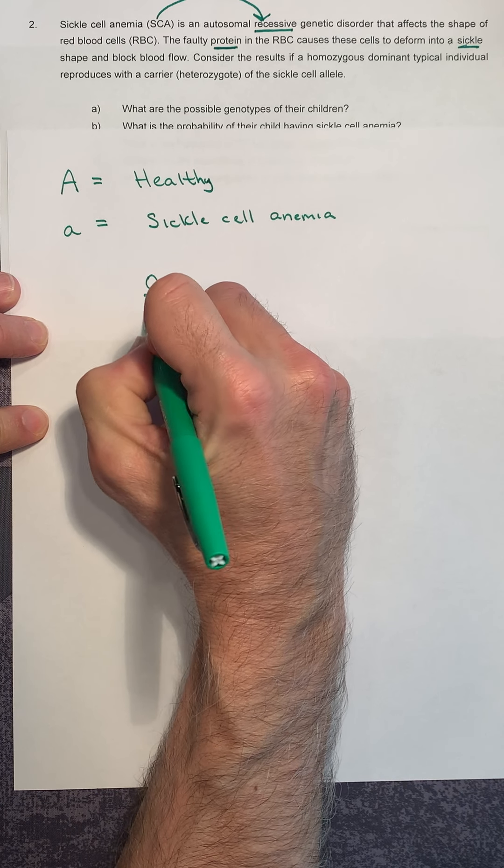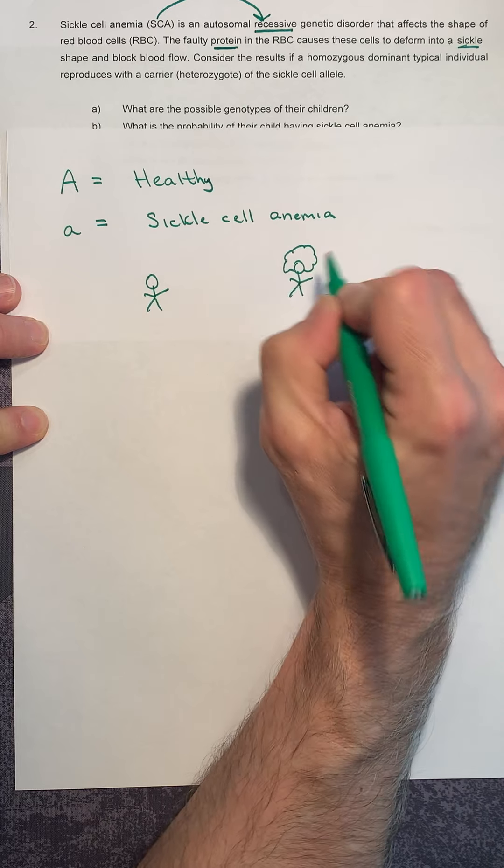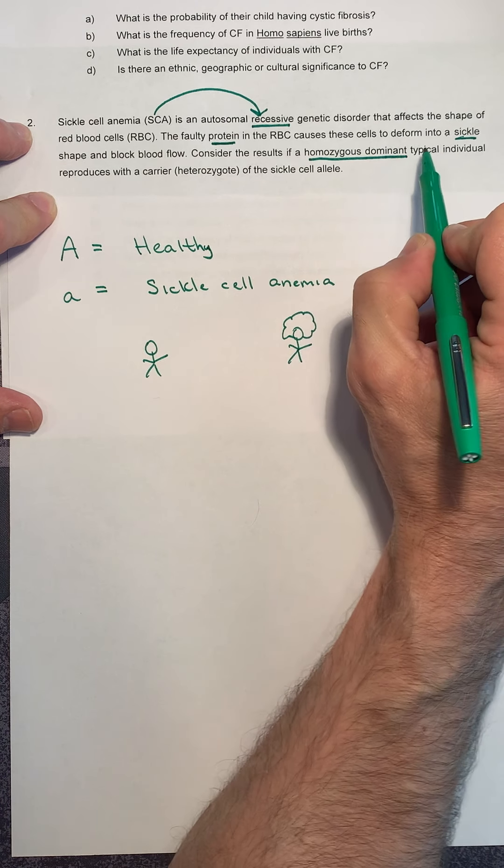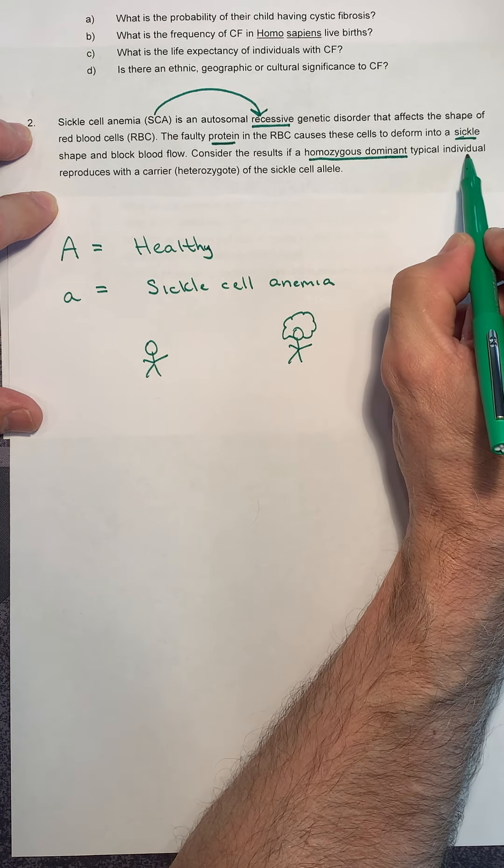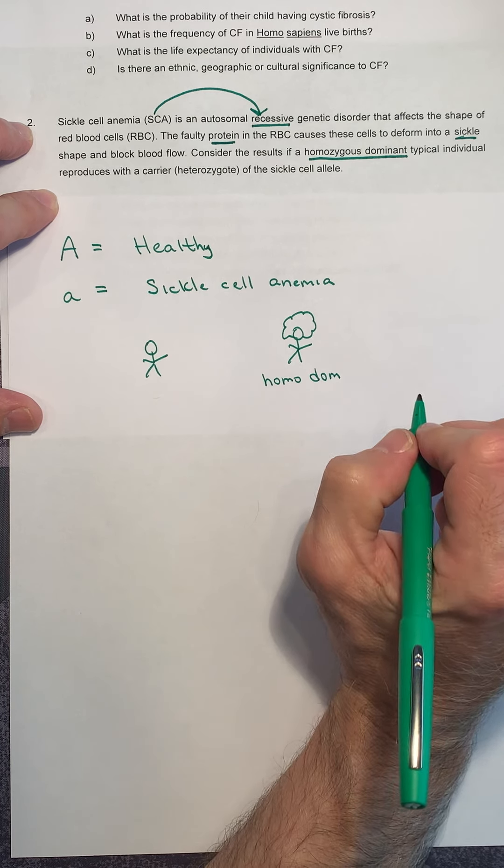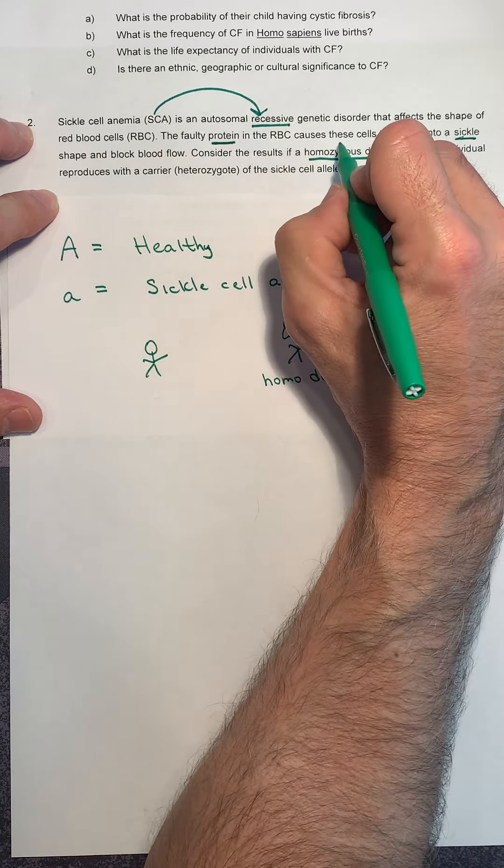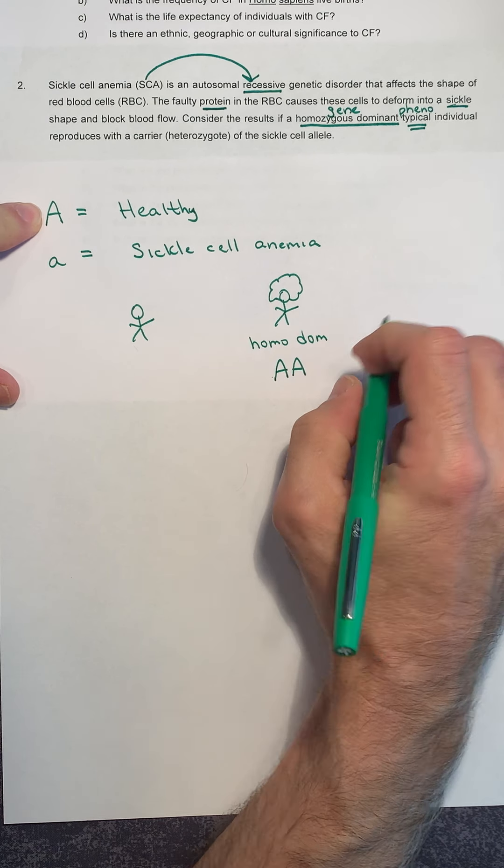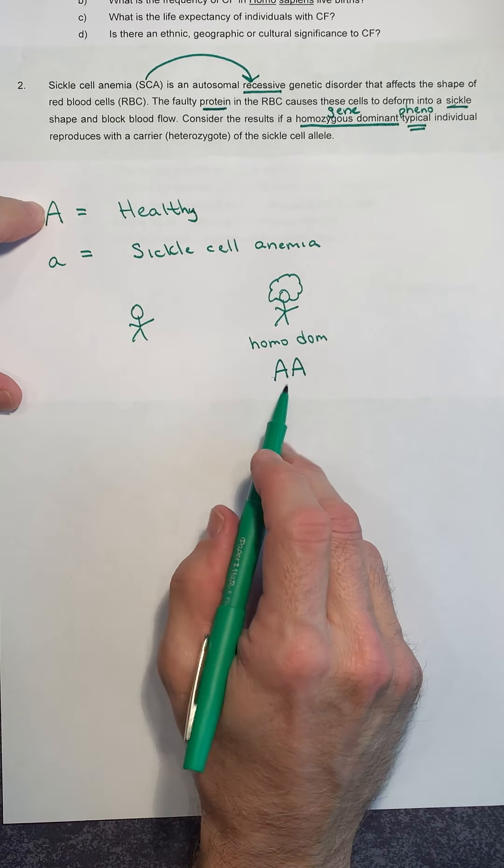So now step three, we need to make our cross. We need to take a look at our parents. So what do we have here? Well, we go back to the question. The question says, consider the results if a homozygous dominant, typical individual, homozygous dominant. So let's make her homozygous dominant. And then it says that she's typical. So this tells us about her genotype, and this tells us about her phenotype. She's homozygous dominant and she's typical. If she's homozygous dominant, homo means same, zygous means pair. So she carries the same pair of alleles. So if she carries the same pair and they're dominant, that would be big A, big A. She's big A, big A. And since she's typical, that means that she's healthy. That's good news.